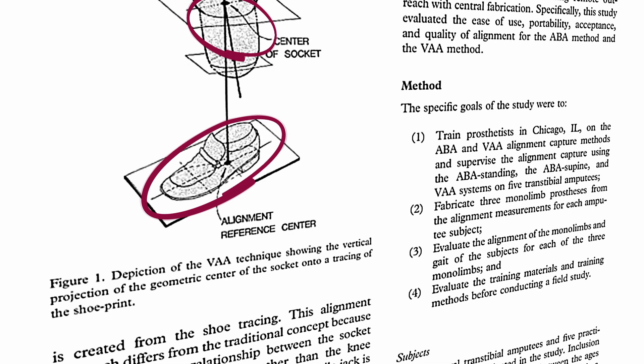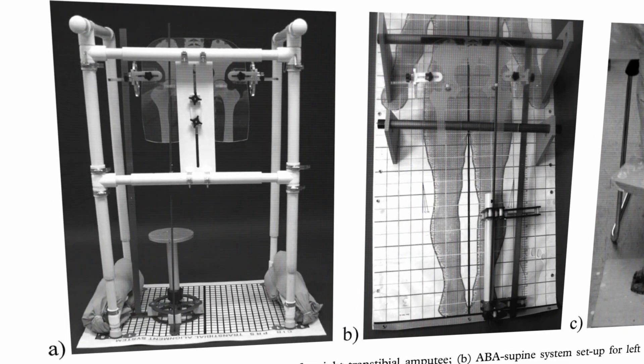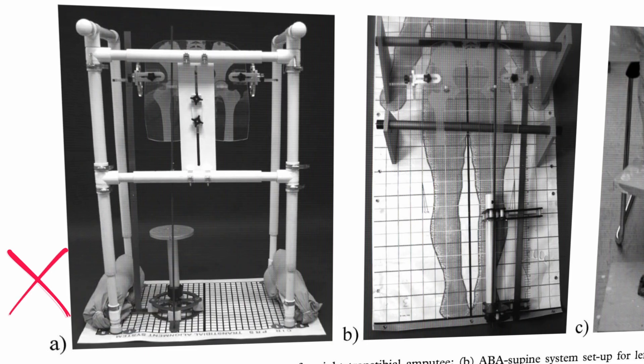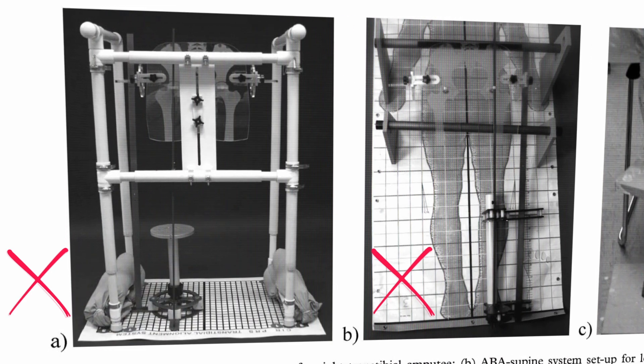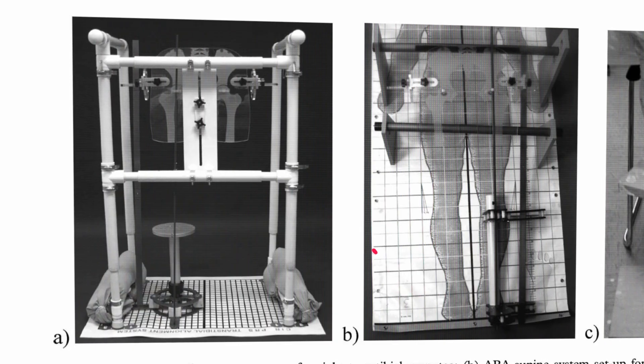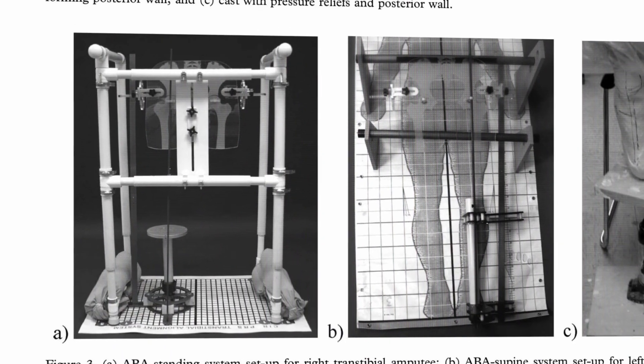Adjust for socket flexion and rotation and you have your alignment. The anatomical based alignment method, or short ABA, uses anatomical landmarks as its main reference. Either in a standing frame or in supine position, the alignment is transferred on the cast using the alignment rods. This aligns the hip, knee and ankle joint center on a straight line. A simple way with clearly defined landmarks on the user itself.